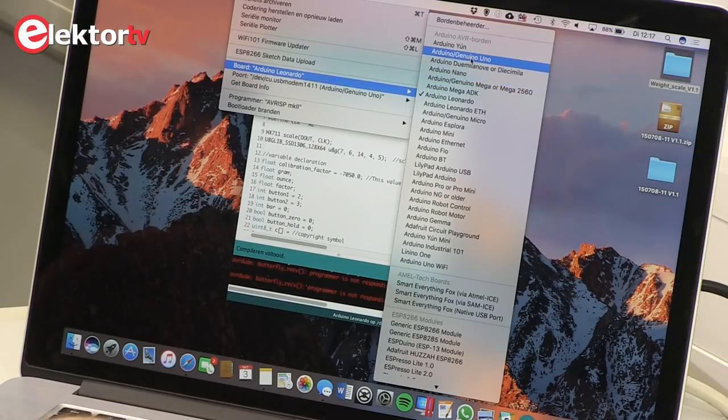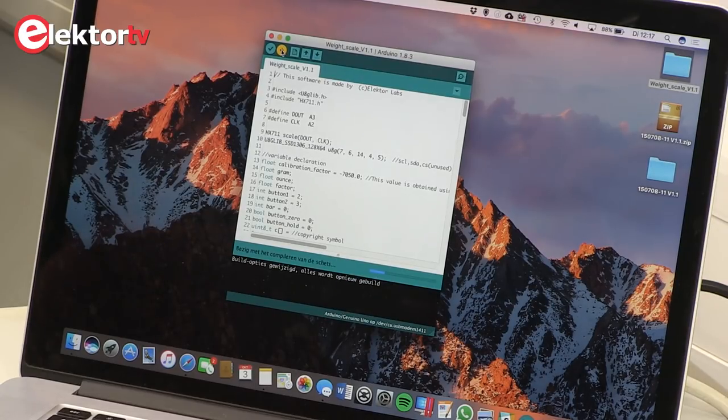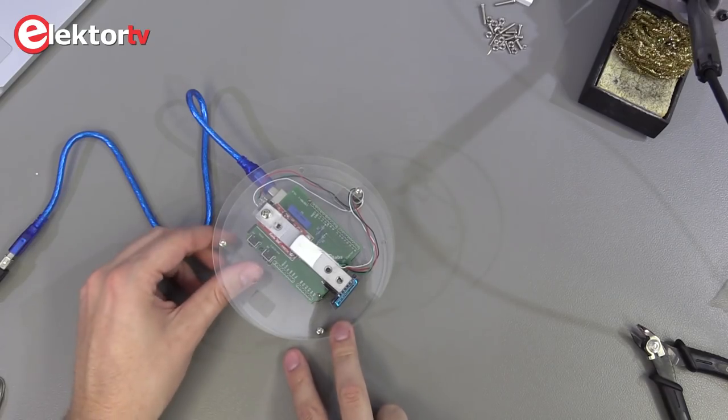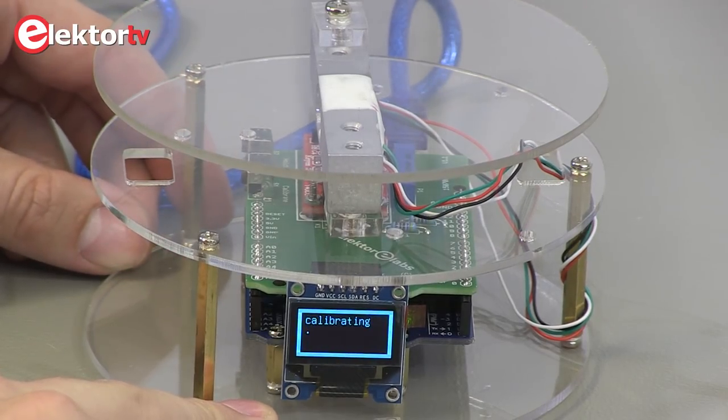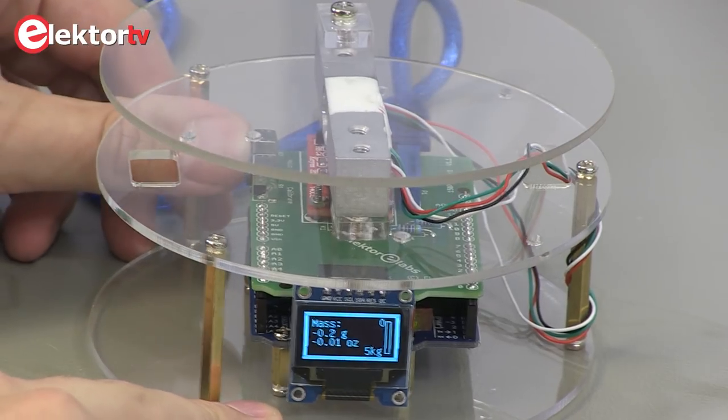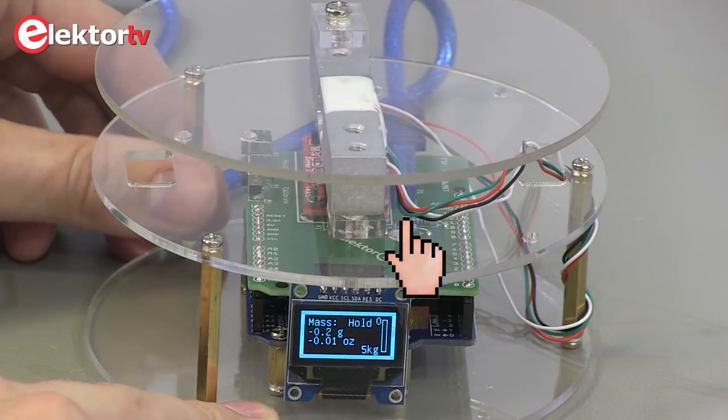Now we can load the software into the Arduino. First select the Uno. As you can see it's already alive. First we have to calibrate the scale by pushing this button. The other button is for the hold function. With the multi-turn potentiometer we can adjust the calibration.